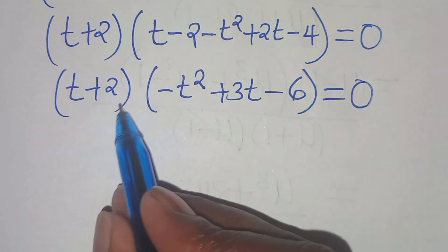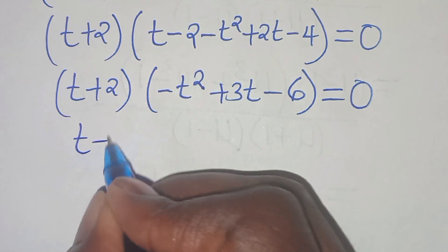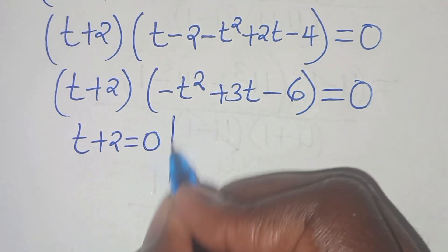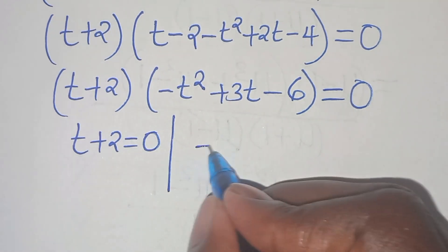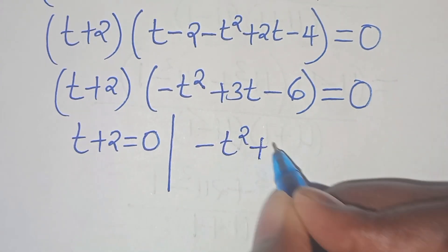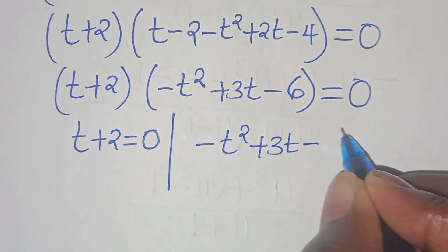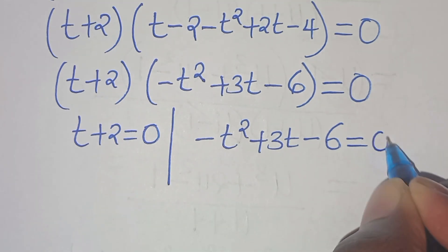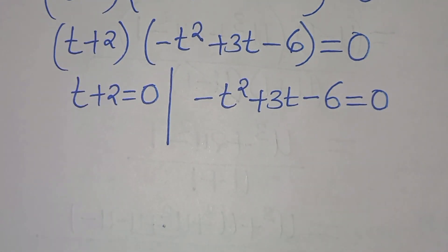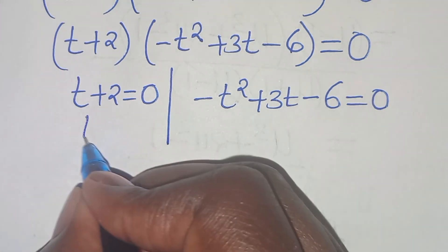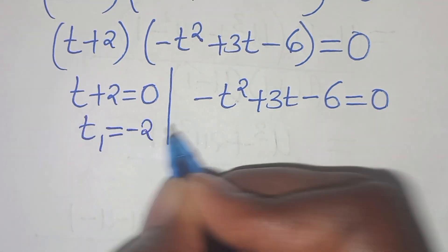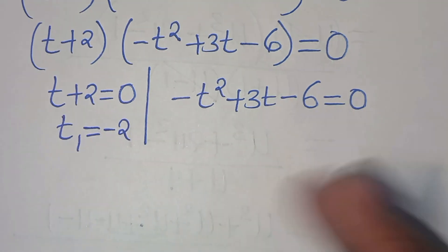From the first factor we get t plus 2 equals 0, giving us t₁ equals minus 2. This is a real solution.